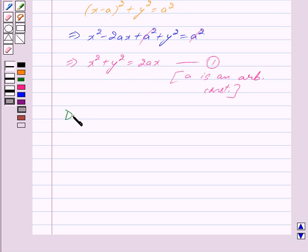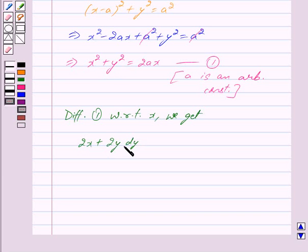Differentiating 1 with respect to x, we get 2x plus 2y dy/dx is equal to 2a.